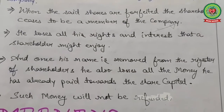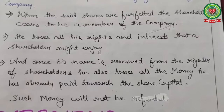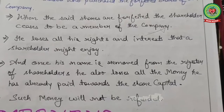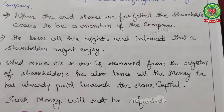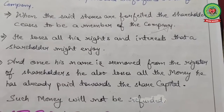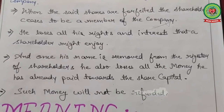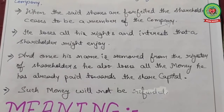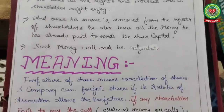Now for your revision: why is forfeiture required? Forfeiture simply means cancellation of shares, and with the help of this the company removes the old shareholder's name from the register and records the new shareholder. Effect of forfeiture: when shares are forfeited, the shareholder ceases to be a member of the company. He loses all his rights and interest. Once his name is removed from the register of shareholders, he also loses all the money he has already paid towards the share capital — such money will not be refunded.